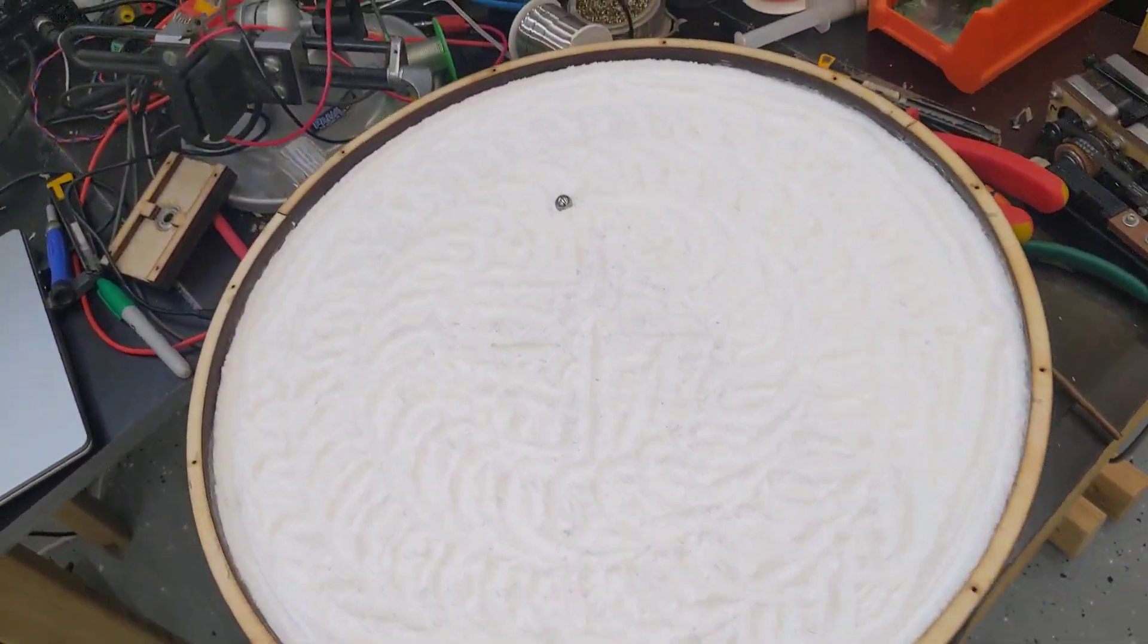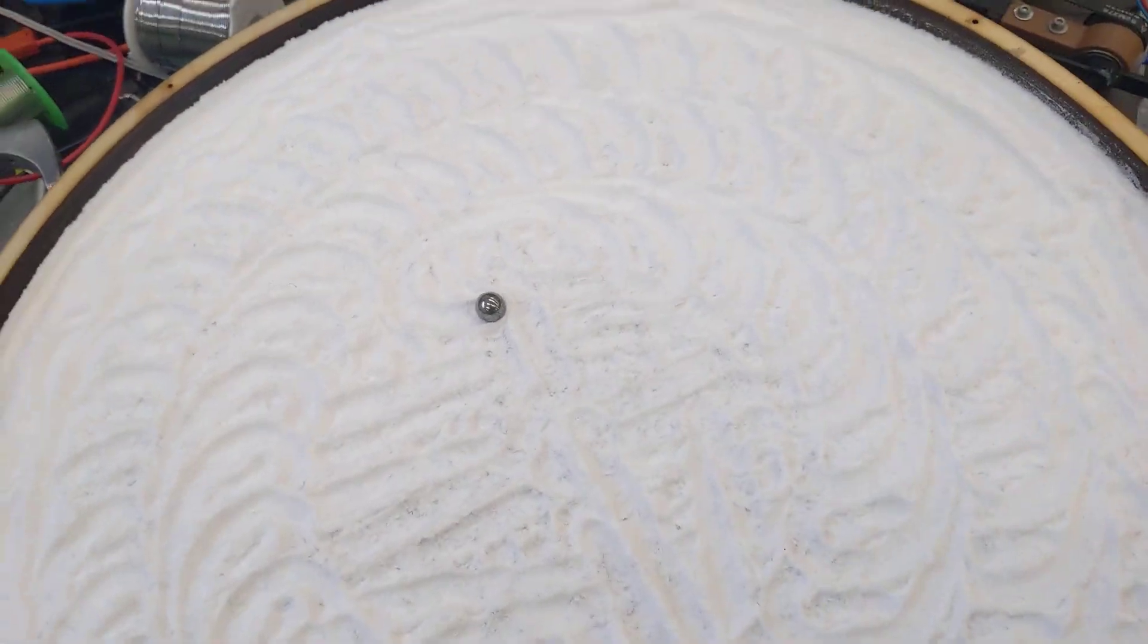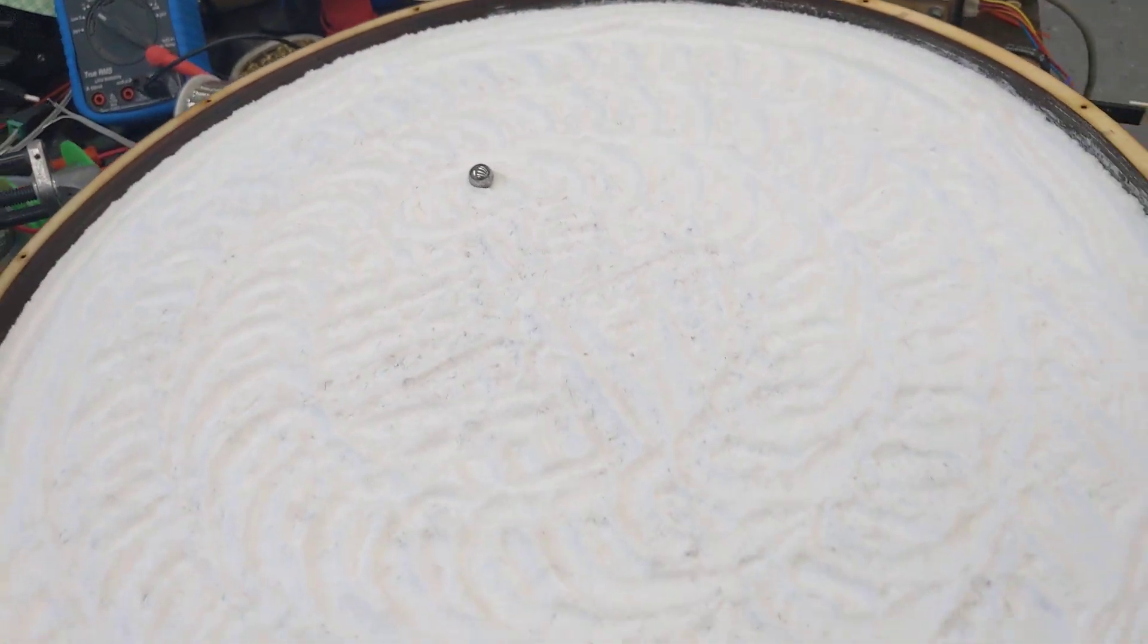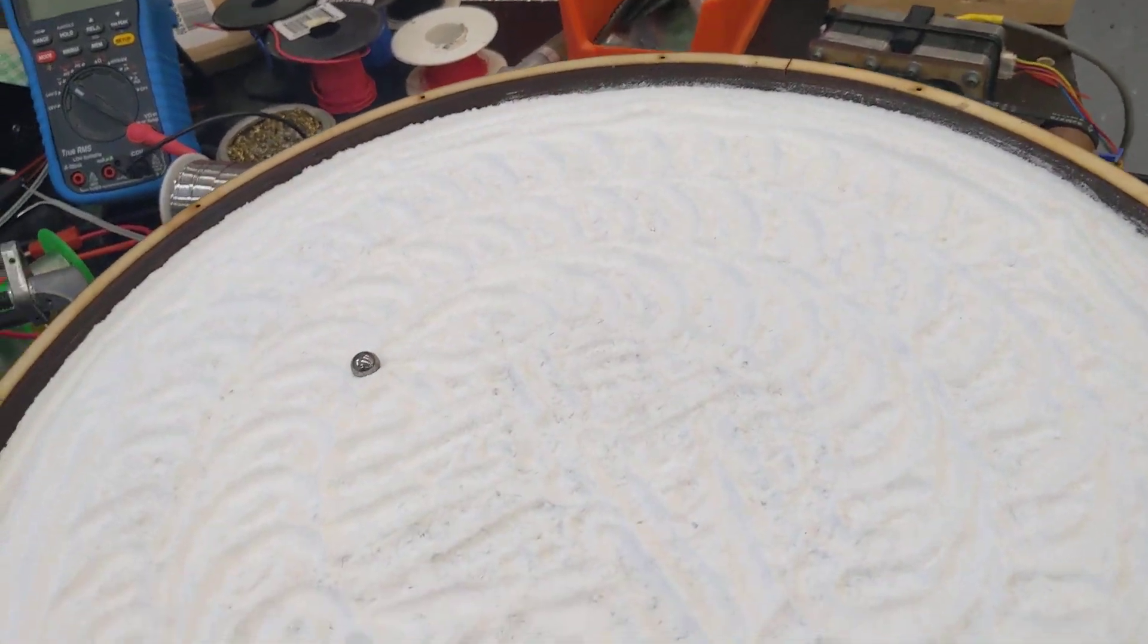And I put a layer of felt down underneath the sand—the baking soda sand—and I think that was a terrible idea.